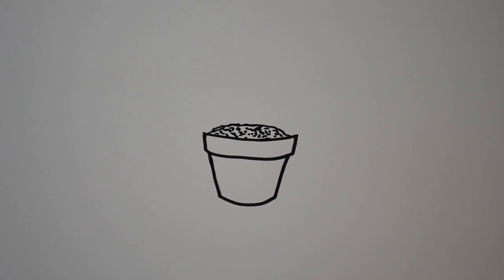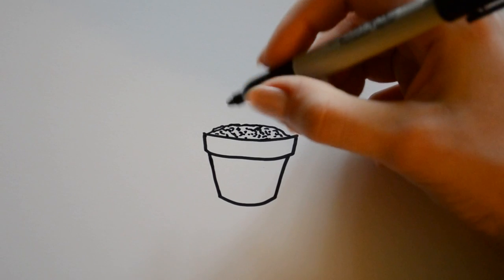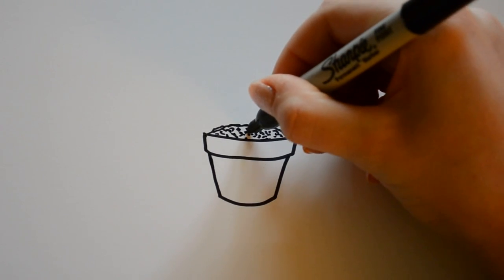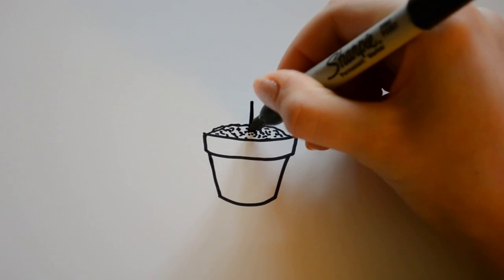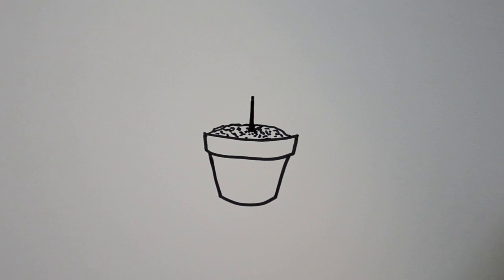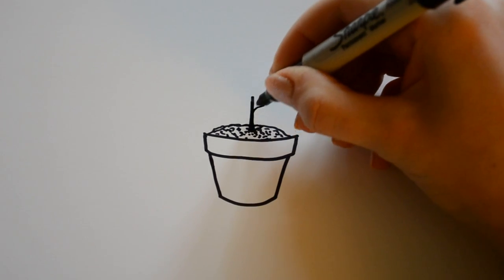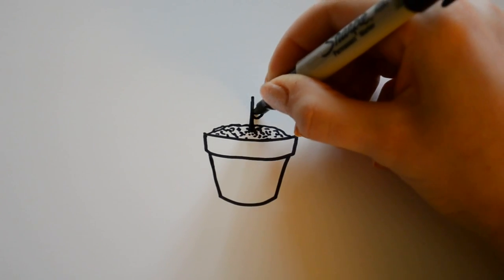And then from there you can draw, I'm going to draw a potted flower. So I start off by drawing the stem, which is just a small line like that. And then a little leaf coming out of it like that.